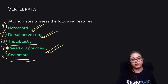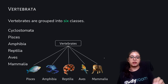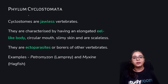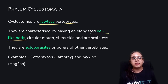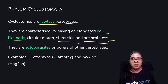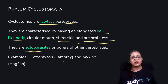Vertebrates are grouped into six classes: Cyclostomata, Pisces, Amphibia, Reptilia, Aves, and Mammalia. Cyclostomata are jawless vertebrates, characterized by an elongated eel-like body, a circular mouth, and slimy scaleless skin. They live as ectoparasites or borers of other vertebrates. Examples: Petromyzon (lamprey) and Myxine (hagfish).